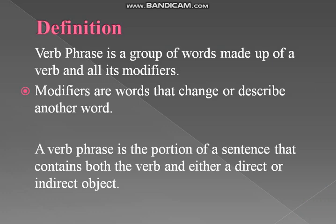Definition: A verb phrase is a group of words made up of a verb and all its modifiers. So a verb phrase consists of a verb along with its modifiers. What are modifiers? Modifiers are words that change or describe another word — they tell us something about another word. So the verb along with its modifiers would be a verb phrase.